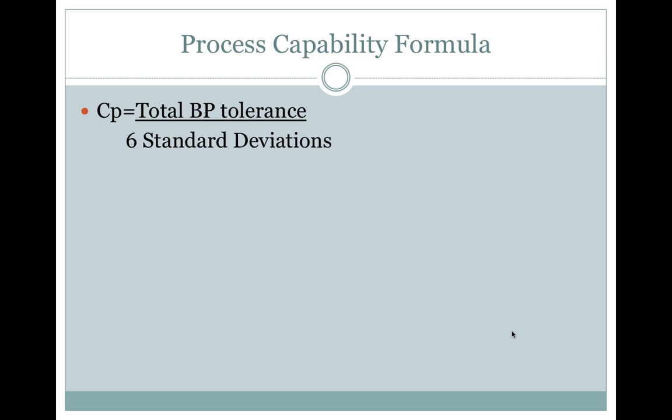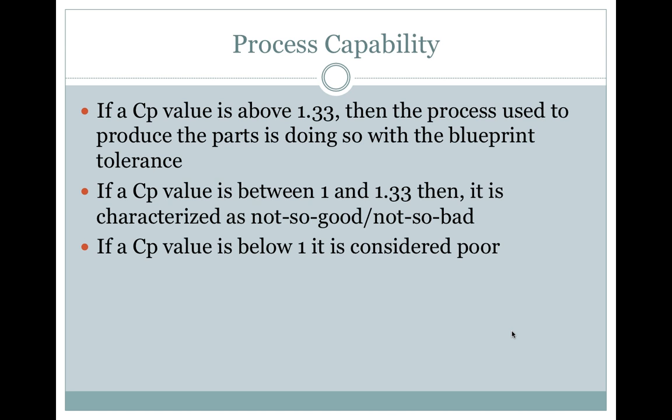Process Capability Formula. If a CP value is above 1.33, then the process used to produce the parts is going to do so within the blueprint tolerance. If a CP value is between 1 and 1.3, then it is characterized as not so good or not so bad. If a CP value is below 1, it is considered poor.